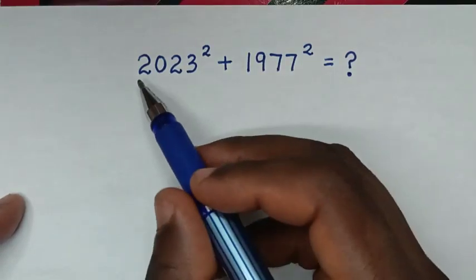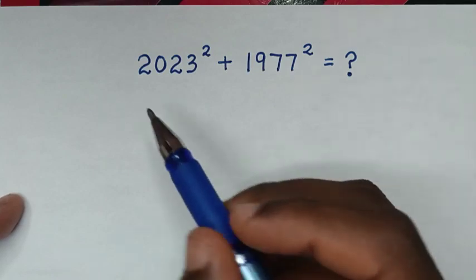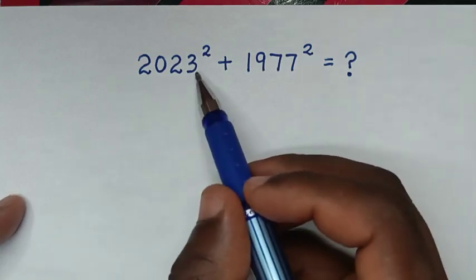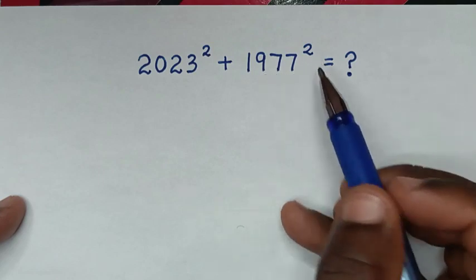Hello. You are welcome to solve this math problem without using a calculator. Our problem is 2023² + 1977².